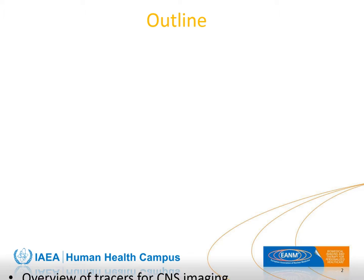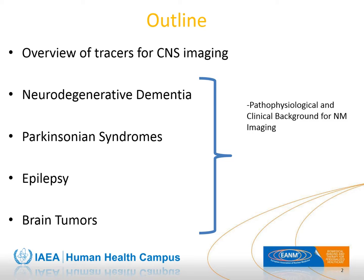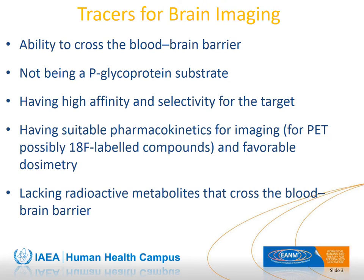We will first have an overview of tracers for central nervous system imaging. Then we will discuss different neurological disorders including neurodegenerative dementia, Parkinsonian syndromes, epilepsy, and brain tumors. For each disorder, we will focus on pathophysiological and clinical background, tracer distribution and diagnostic contribution, and demonstrative cases with questions and answers.